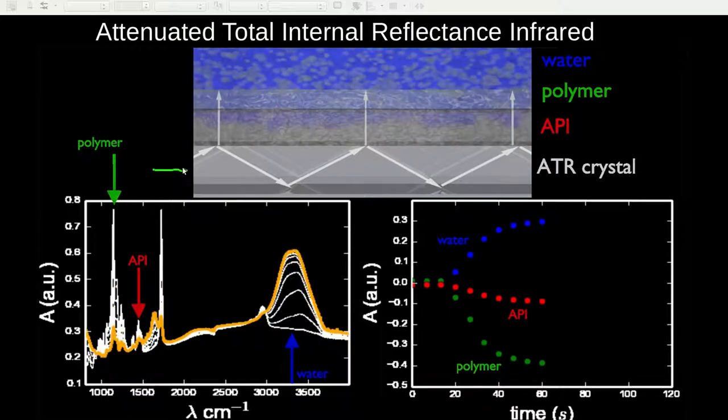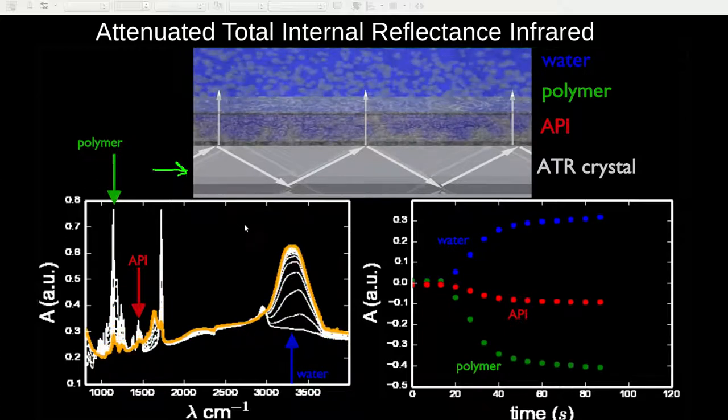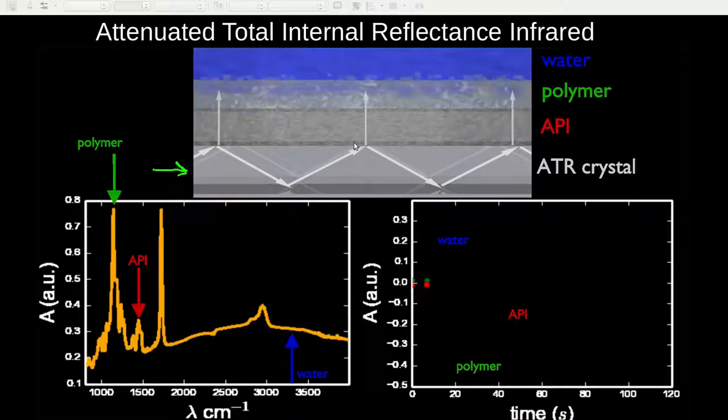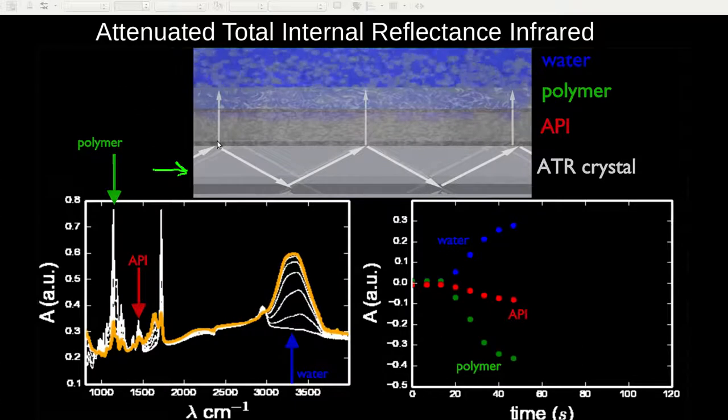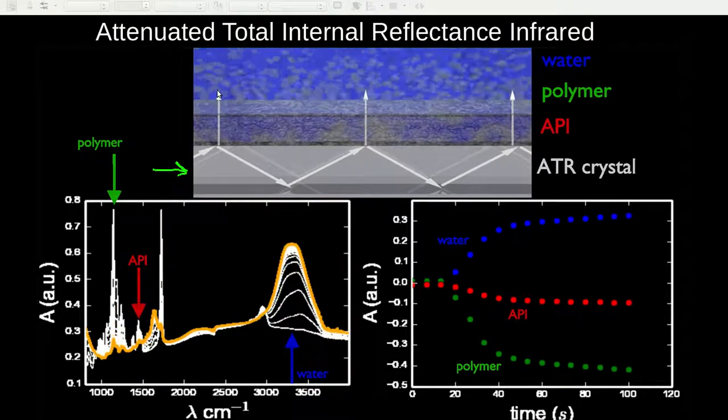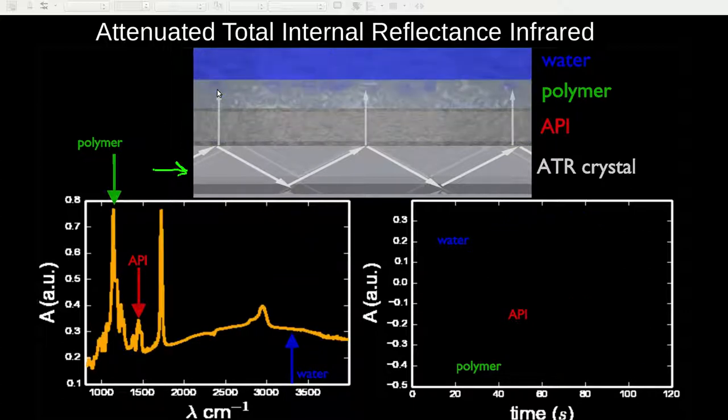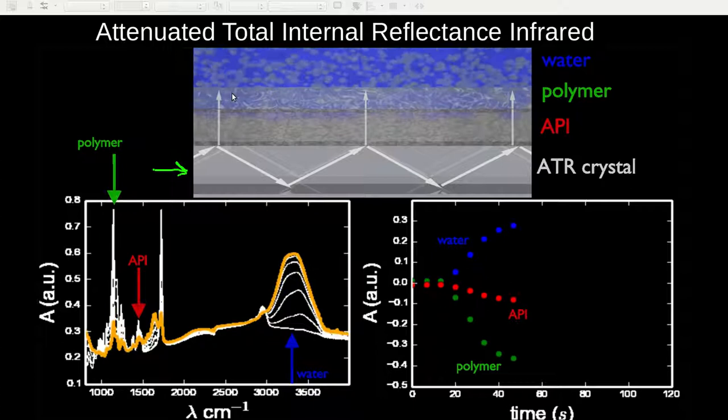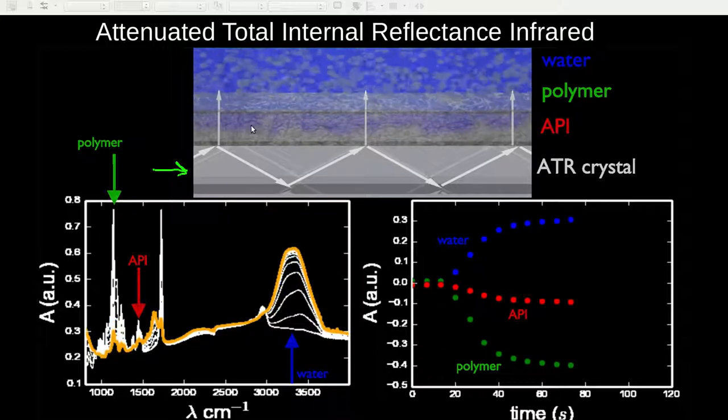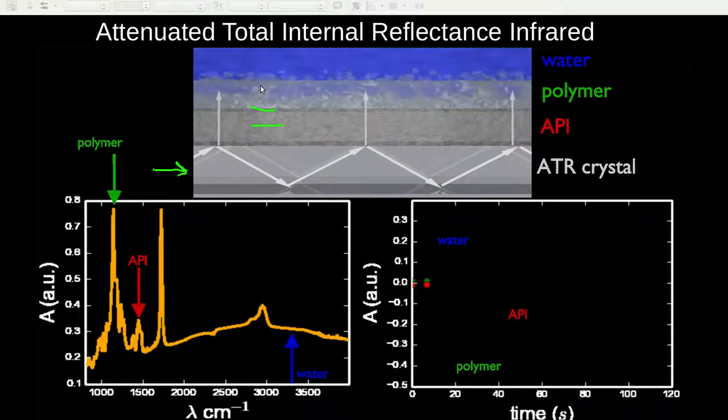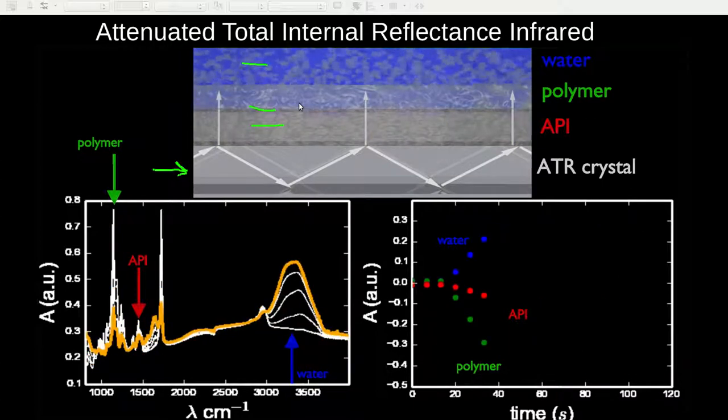At the base is the ATR crystal in which the infrared radiation bounces within the crystal. When it bounces off the interface, it releases what is called an evanescent wave which penetrates into our sample and therefore we can get a spectroscopic reading of the sample above the surface of the crystal. In this case, we have a crizotinib core coated with a polymer film and then on top, we put our buffer solution of varying pH.